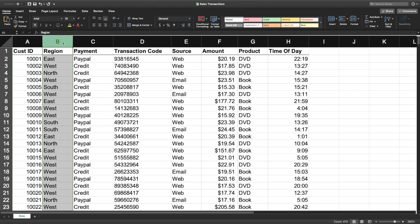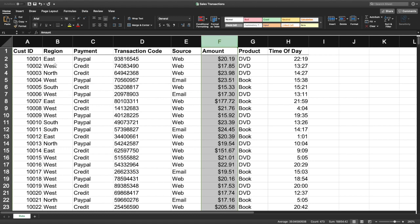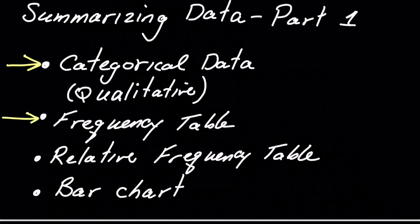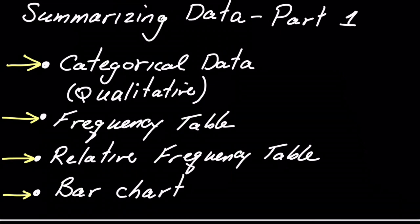These are different types of variables — there are categorical variables and numerical variables. For example, the region variable is categorical while the amount variable is numerical. Here's an outline of what we're going to do: understand what categorical data is, talk about how to summarize it using a frequency table, a relative frequency table, and then a graphical summary using a bar chart.